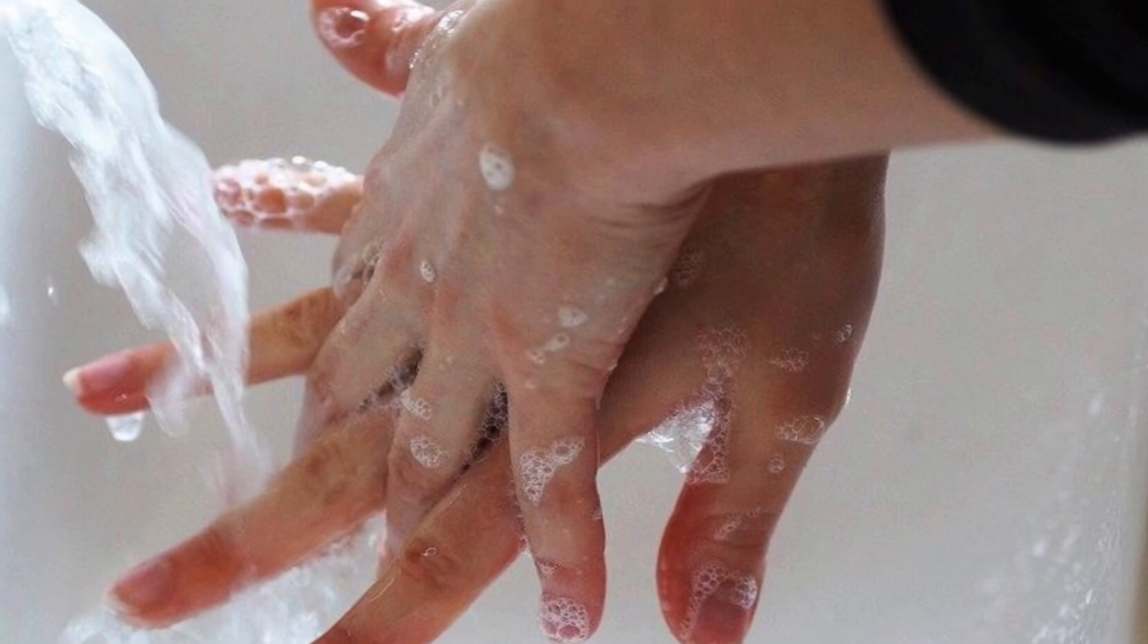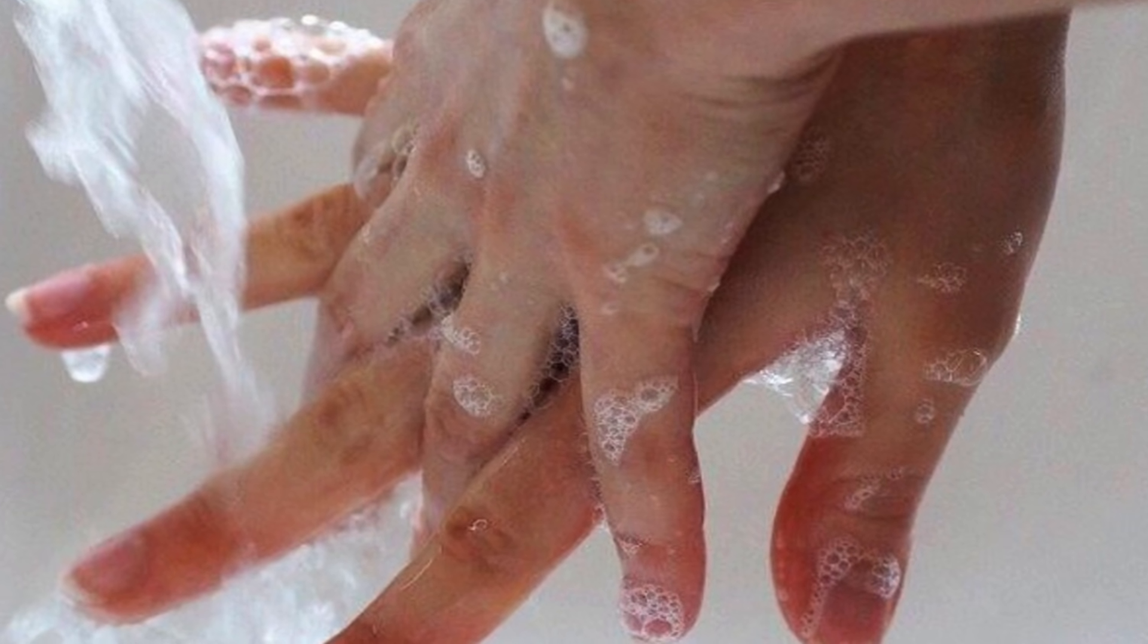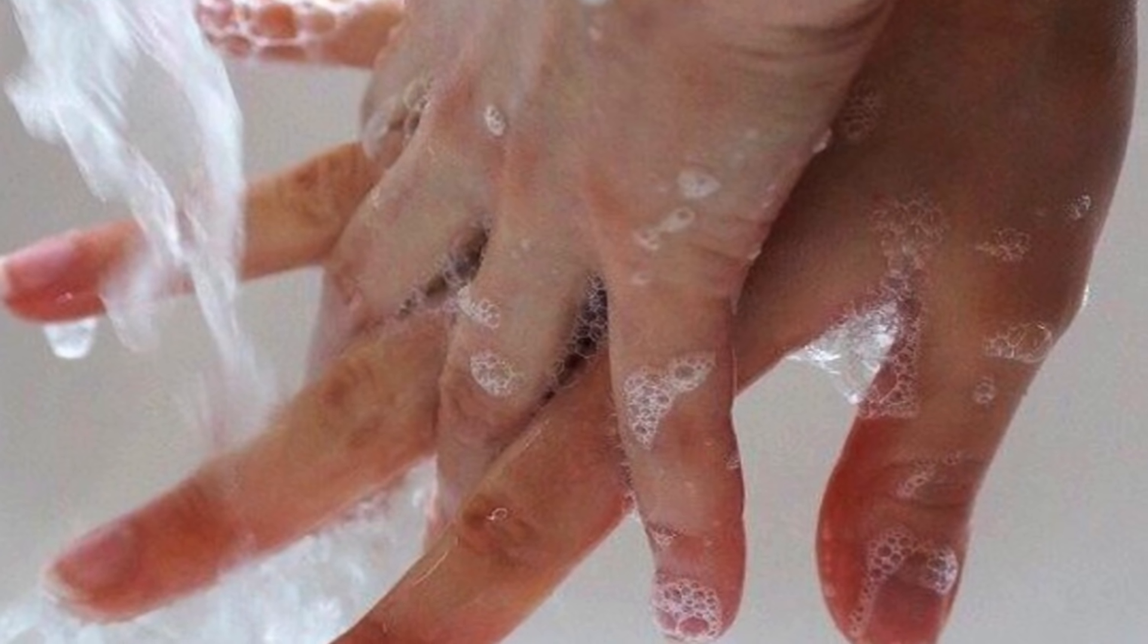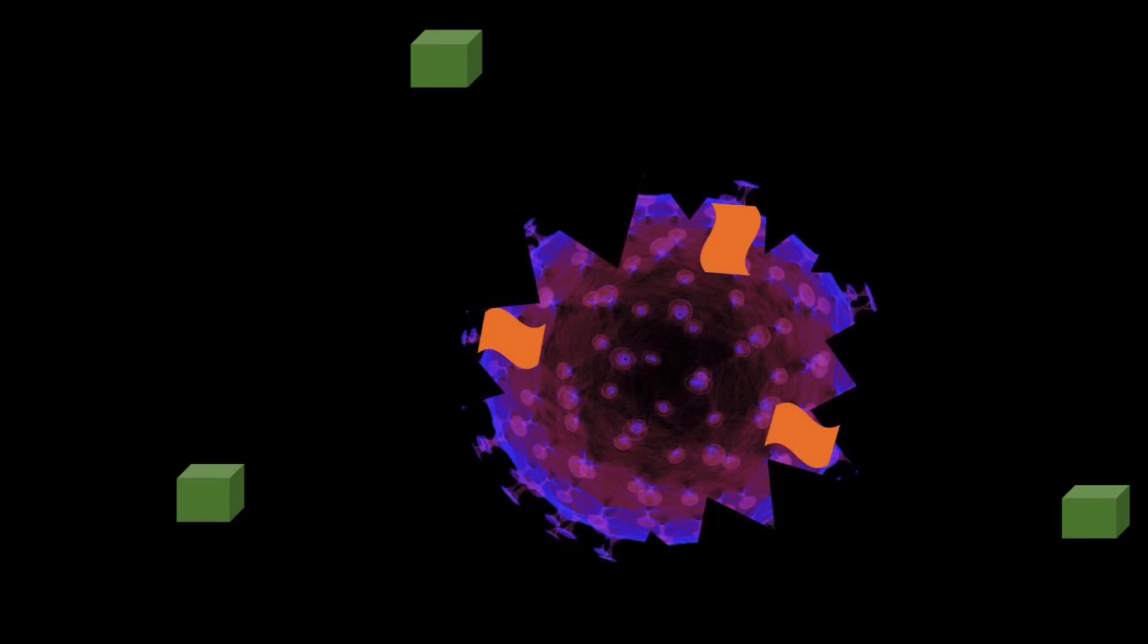When you wash your hands with soap and water, you surround any microorganism on your skin with soap molecules. The hydrophobic tails attempt to evade the water. In the process, they attach themselves into the lipid envelopes of certain microbes and viruses, tearing them apart.